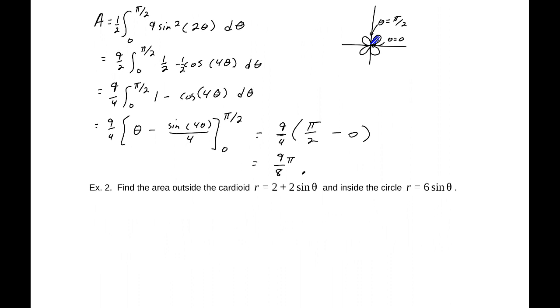Next, find the area outside the cardioid r = 2 + 2sin(θ) and inside the circle r = 6sin(θ). We've actually been specifically told which one is the outer function and which one is the inner function, so we don't have to worry about that. But we do need to know where these two intersect. So we'll set them equal to each other.